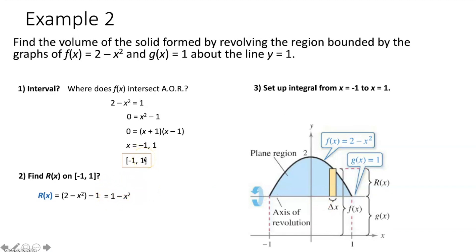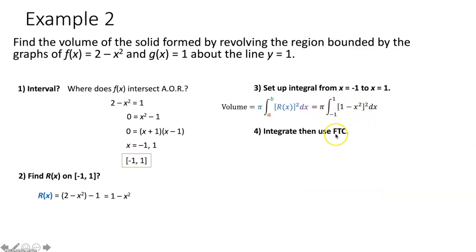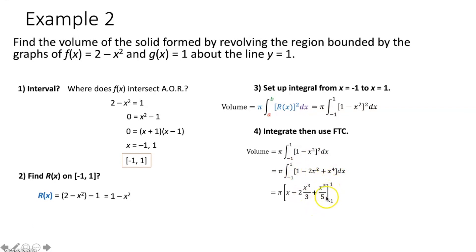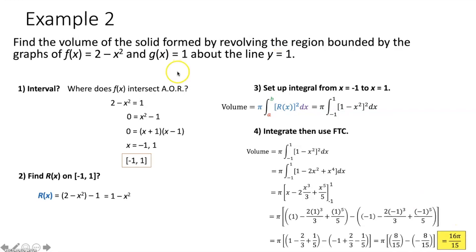Now set up: π ∫₋₁^1 (1 − x²)² dx. Expand (1 − x²)² by FOILing to get 1 − 2x² + x⁴. Integrate term by term using the antiderivative, then apply the fundamental theorem of calculus — plug in x = 1 and subtract when x = −1. Simplifying and multiplying by π gives a volume of 16π/15 for the solid created by revolving the region about y = 1.